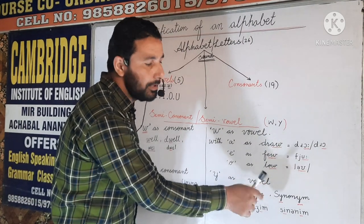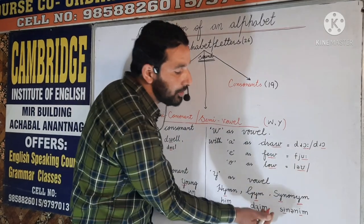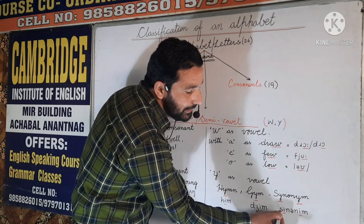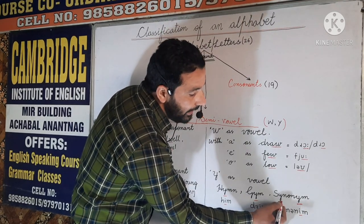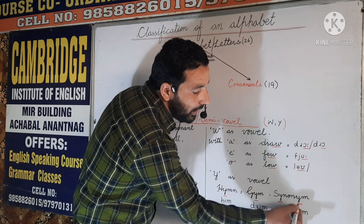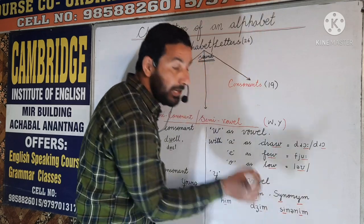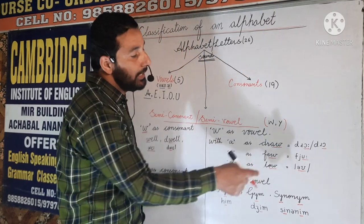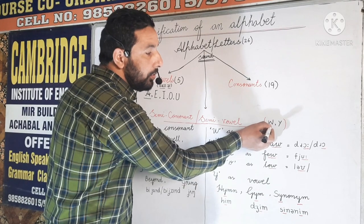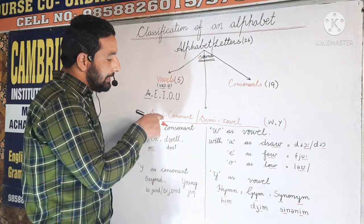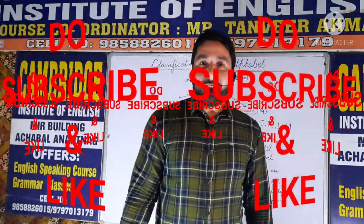We have another example: 'synonym.' Most people mispronounce it, but I have written the correct pronunciation. The two Y's in 'synonym' both have the sound /ɪ/, which in phonetics is considered a vowel sound. I hope you have understood why W and Y are considered semi-consonants or semi-vowels.